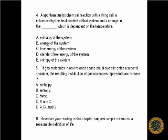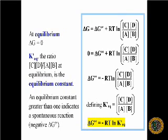We will also use these and other terminologies to suggest a simple criteria for a reasonable definition of life. And typically this involves an equilibrium, which is determined based on the concentration of the components in that system. For instance, in a reaction, the equilibrium ratio of A, B, C, and D is the equilibrium constant. And typically if it's greater than one, it indicates a spontaneous reaction.